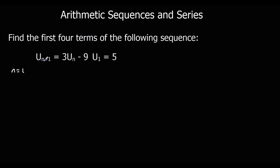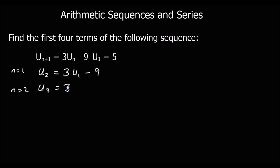It will say u(1+1), so u2, the second term, is three times u1, the first term, minus nine. And I could do that again for n equals two. So u(2+1), the third term, is three times the second term minus nine, and so on. The fourth term would be three lots of the third term, take away nine.